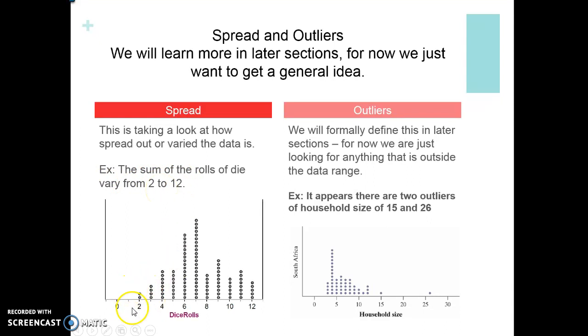Outliers - we're going to formally define this in a later section, there's a mathematical calculation to find an outlier, but for now we're just looking for anything that's outside that data range. If we look here, if we're looking at household sizes, if we take a look at 15 and 26, those are some outliers. They probably either have a lot of kids or they have some family members living with them.